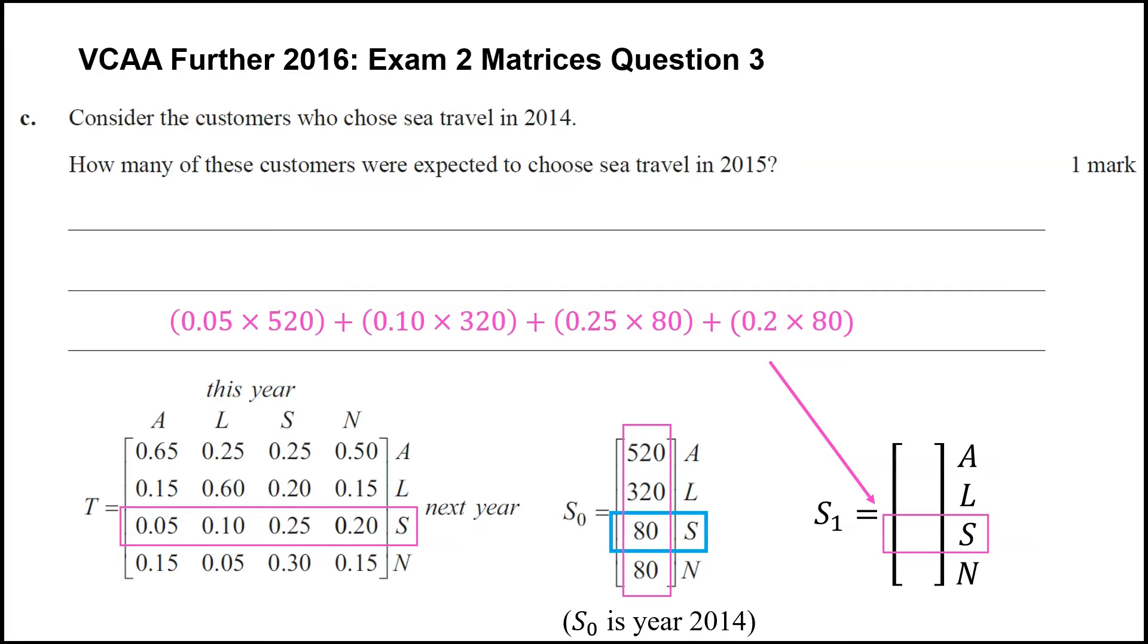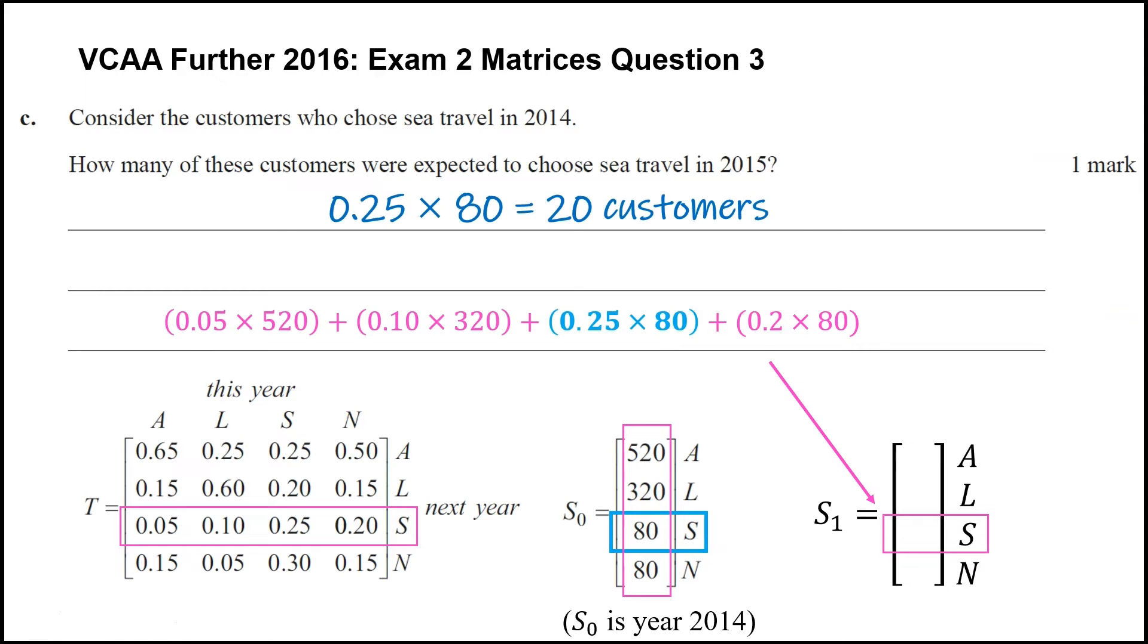Okay, but again, we don't want the total of those people. What we care about is of the customers who chose sea travel in 2014. So of these 80 people, well, 0.25 of them. So that's going to be the answer to our question, which is going to be 20 customers.